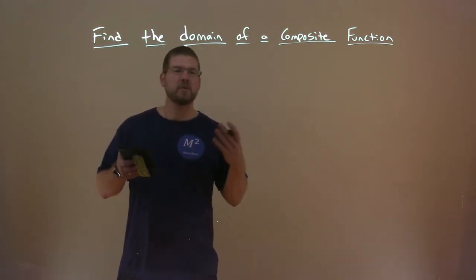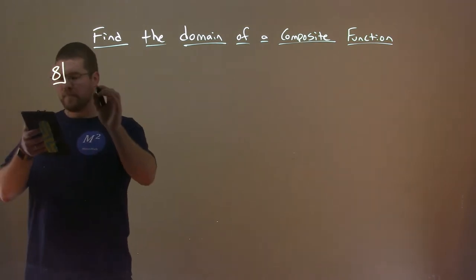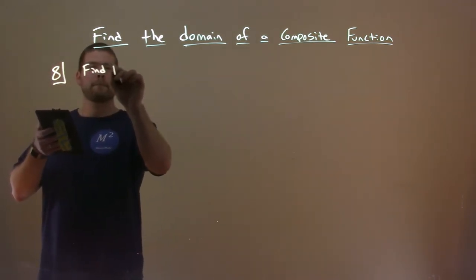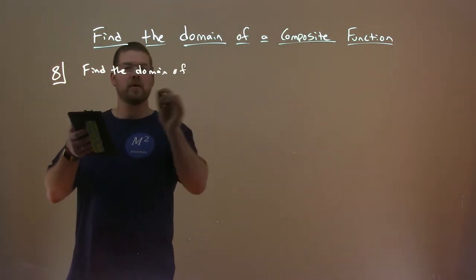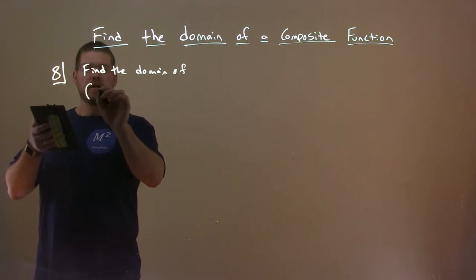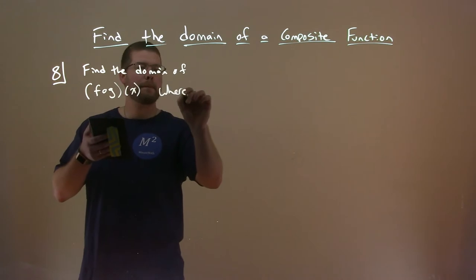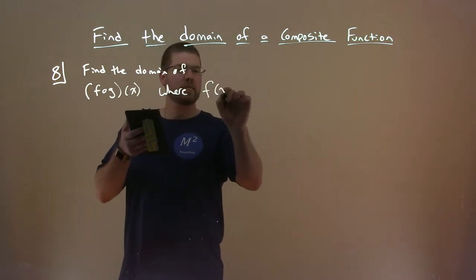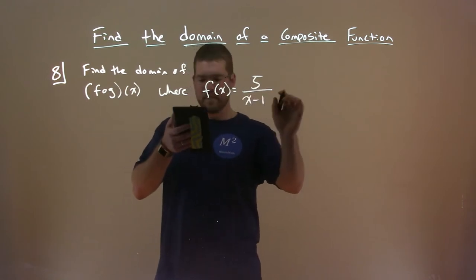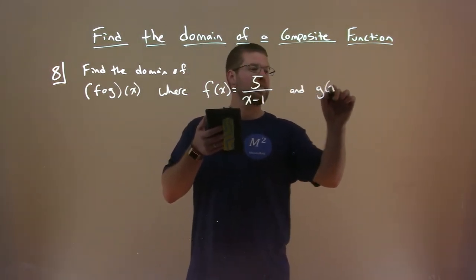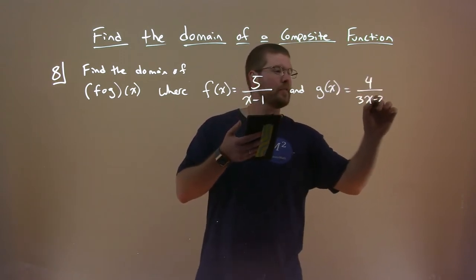So let's just dive into an example here and we can see what it's all about. So we want to find the domain of our composite function f of g of x, where f of x is equal to 5 over x minus 1 and g of x is equal to 4 over 3x minus 2.